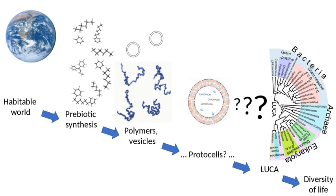The sequence of chemical events that led to the first nucleic acids is not known. Several hypotheses about early life have been proposed, most notably the iron-sulfur world theory, metabolism without genetics, and the RNA world hypothesis — RNA life forms.